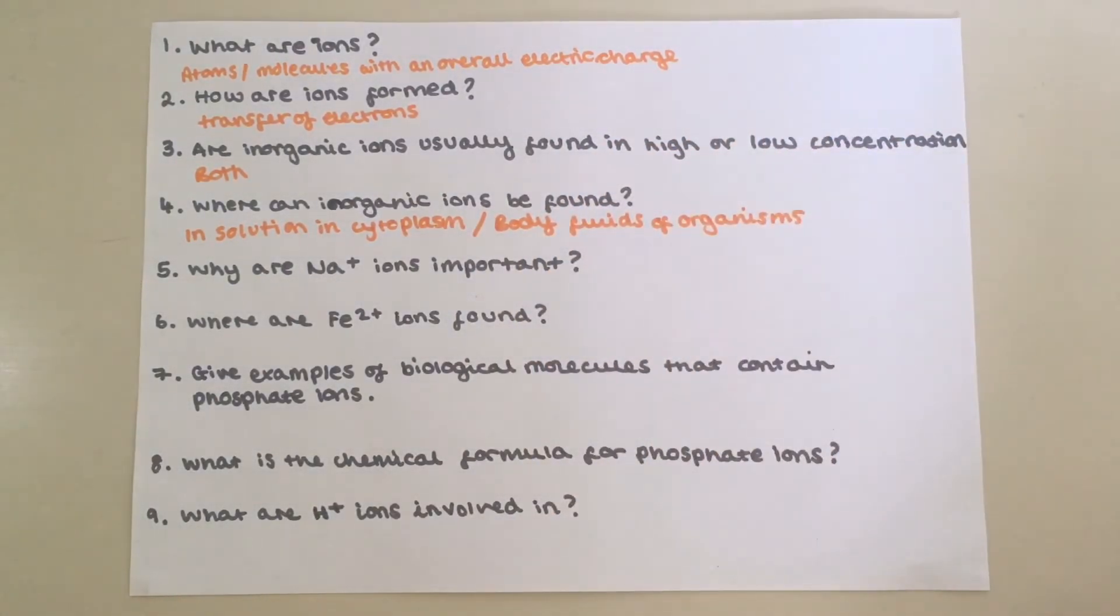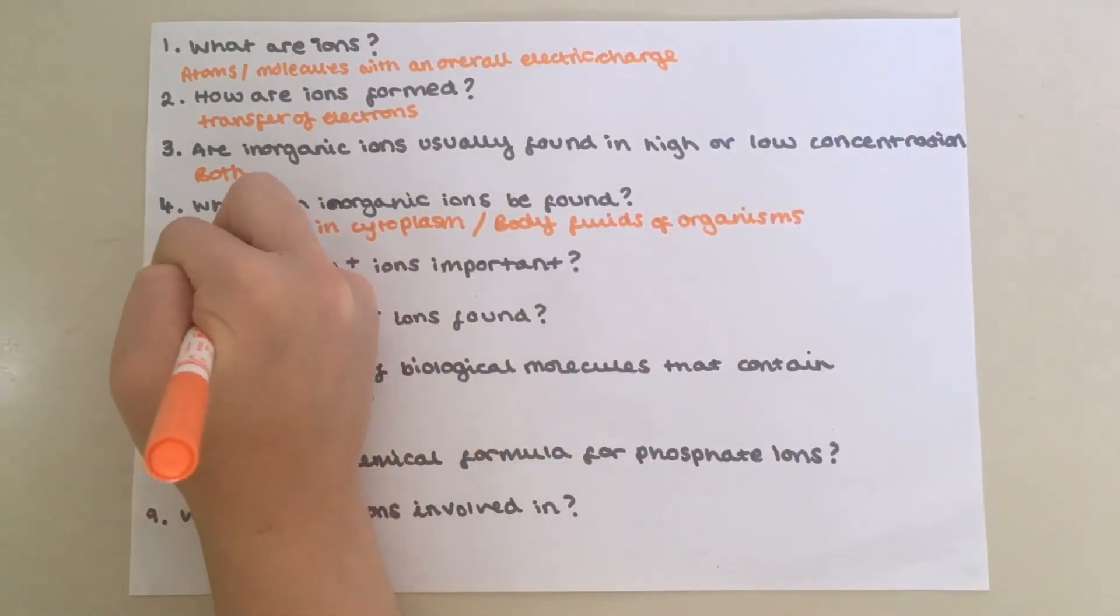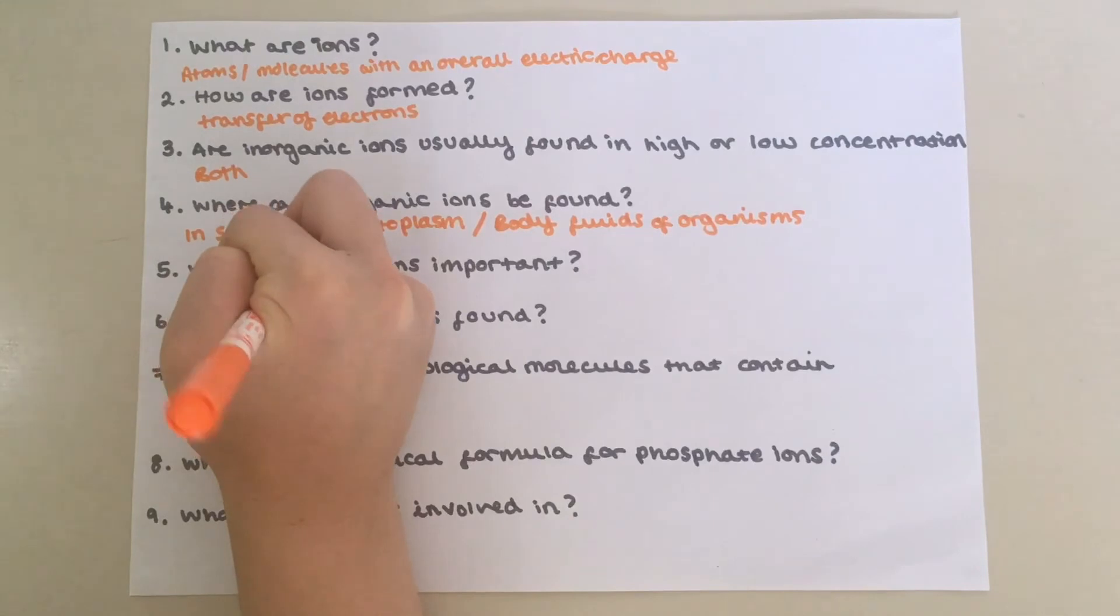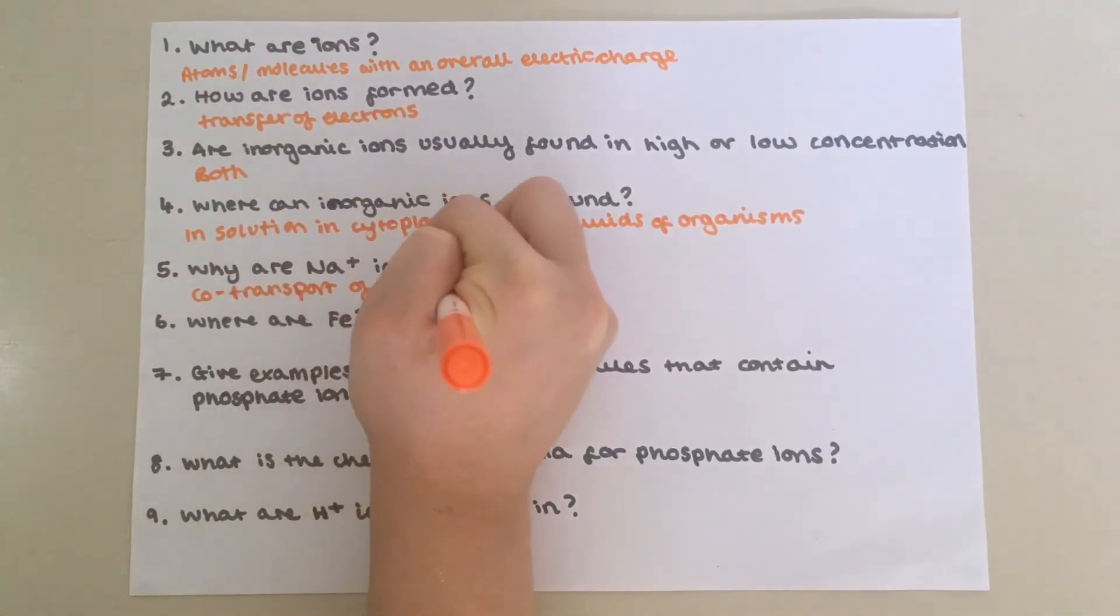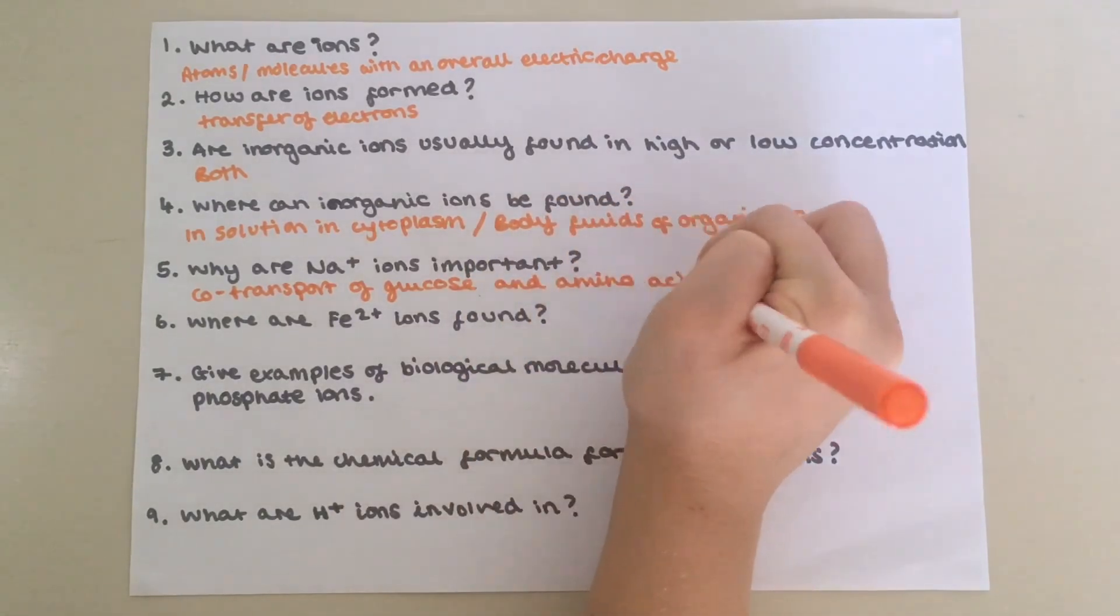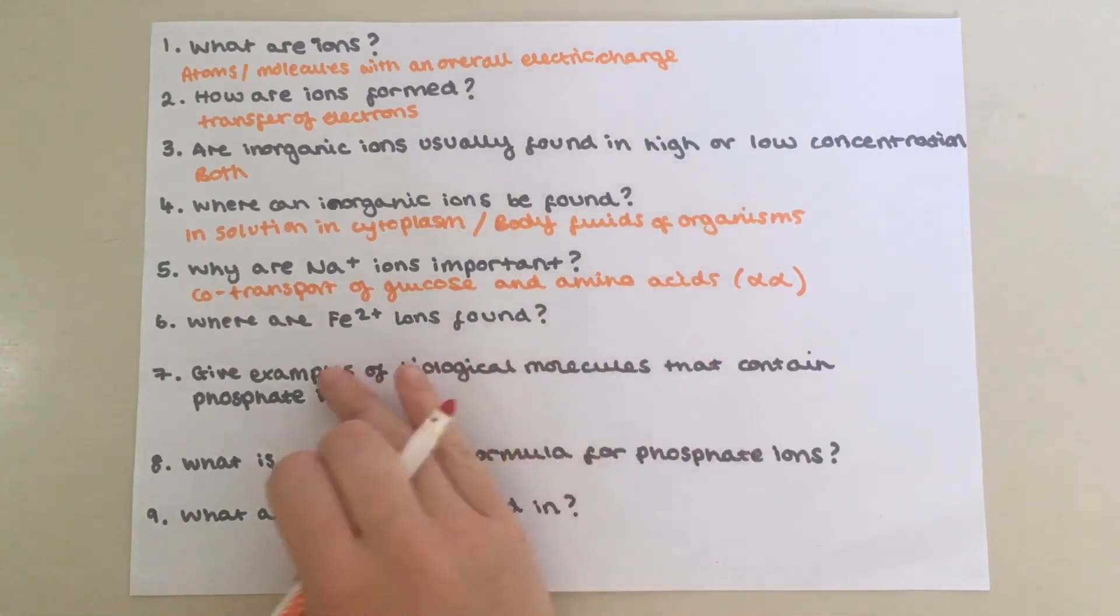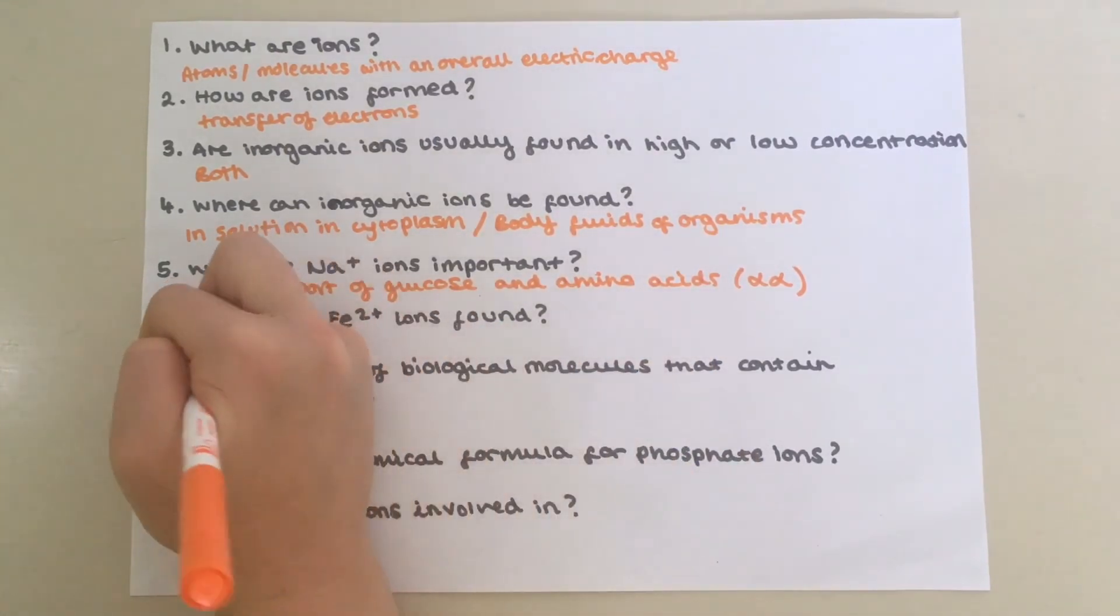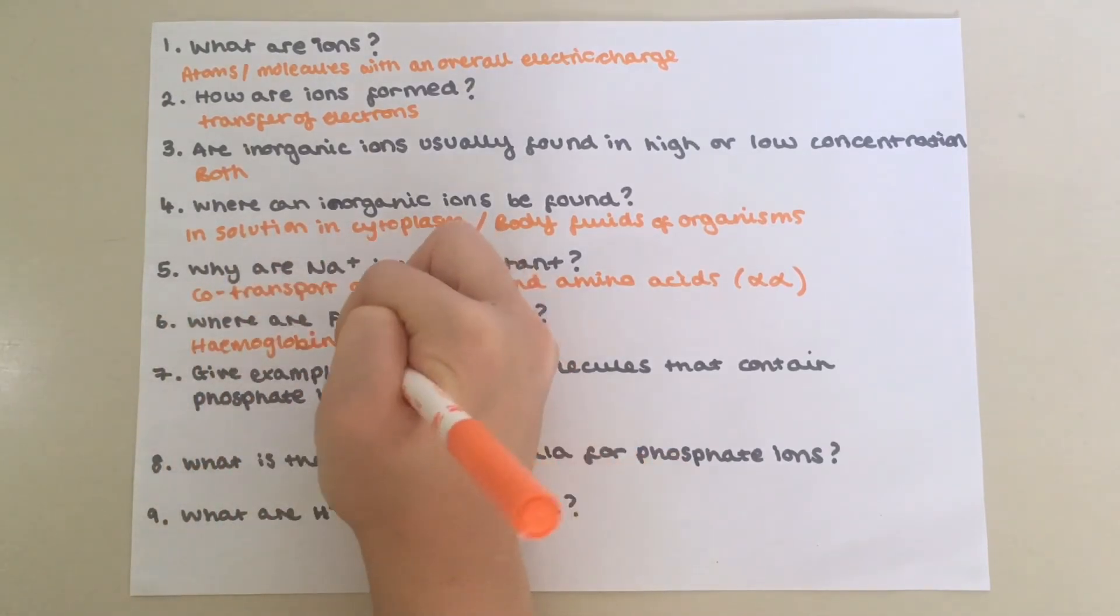Five, why are sodium ions important? Because they are involved in co-transport of glucose and amino acids. Six, where are Fe2+ ions found? They are found in hemoglobin, which is found in red blood cells.